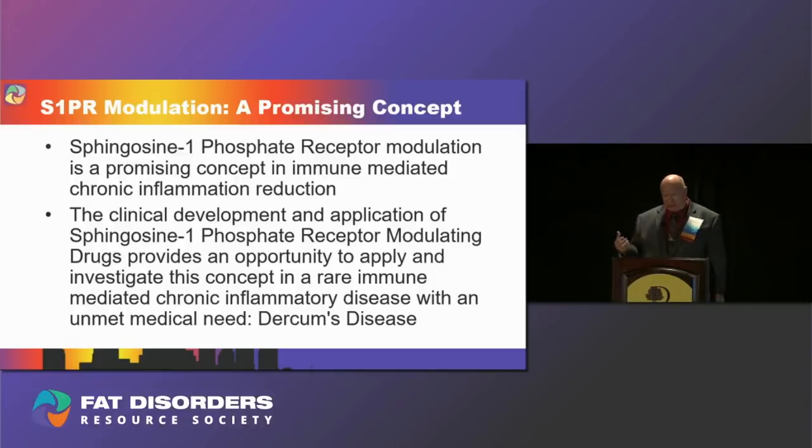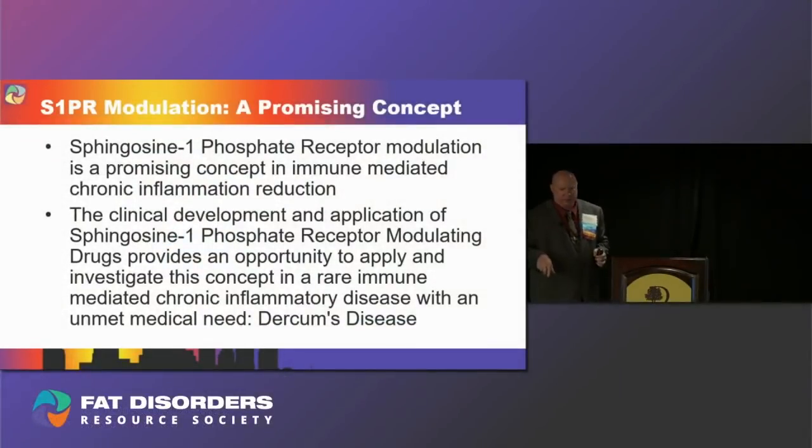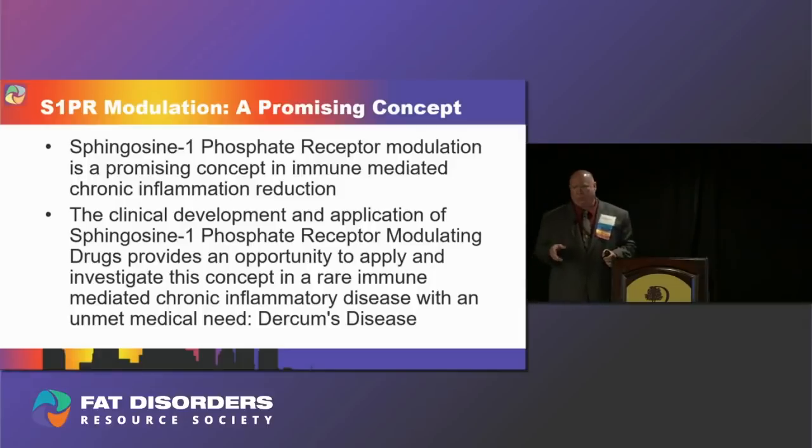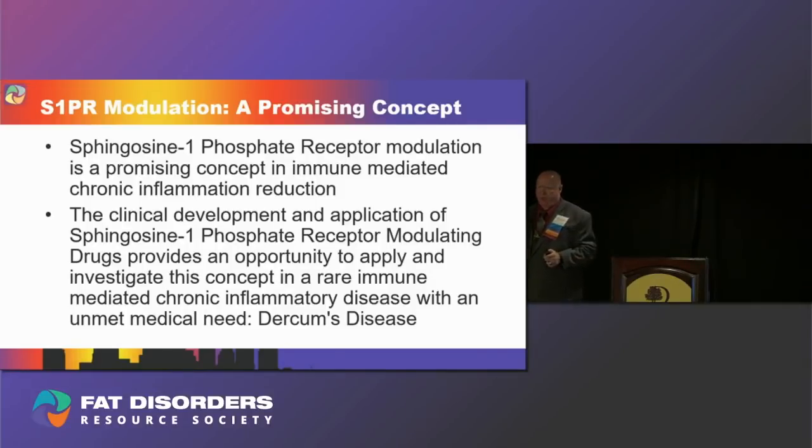There is currently a clinical trial on the use of ozanimod in moderate to severe active Crohn's disease. In that trial, Dercum's disease in and of itself is not an exclusion criterion. Therefore, an individual who has both moderate to severe active Crohn's disease and Dercum's disease could potentially participate in this current clinical trial, provided they meet all inclusion criteria and none of the exclusion criteria. The purpose of the trial is not to assess ozanimod's efficacy in treating Dercum's disease, but any information obtained from such participants regarding its effect on Dercum's disease would of course be helpful.